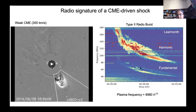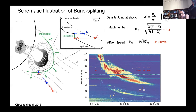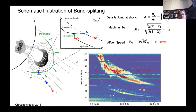If you look closely at the harmonic or fundamental, you can see that their bands are split. Here we have a schematic illustration. We have an active region from which the CME propagates, causing a shock. We can see two almost co-spatial emission sources from two wedges of the shock front. In the downstream region the density is higher, giving the upper frequency band, and from the upstream region we have the lower frequency band.